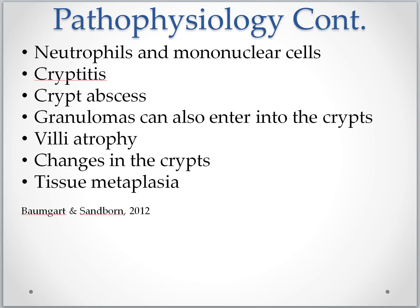The chronic nature of the inflammatory response causes the villi to atrophy. It also causes changes in the crypts which can lead to tissue metaplasia — the transformation of one kind of tissue into another undesirable tissue, which is what typically happens in cancer formation. This causes an increased risk of cancer in the areas of diseased tissue for folks with Crohn's disease.